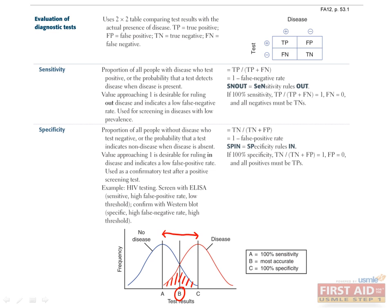If you can perform two successive tests, it is best to start with a highly sensitive test, such as the ELISA for screening purposes, and then follow up with a highly specific test, such as the Western blot, for confirmatory purposes.